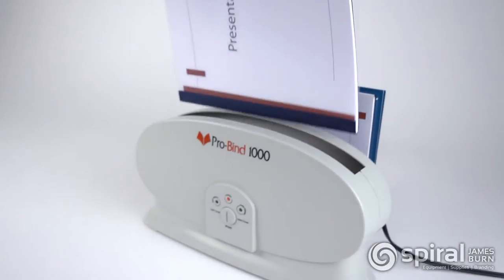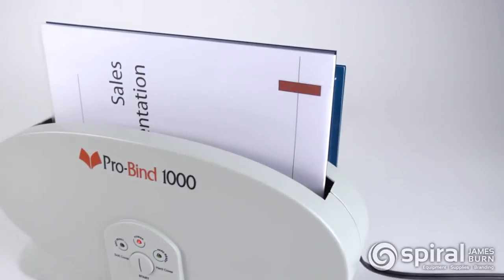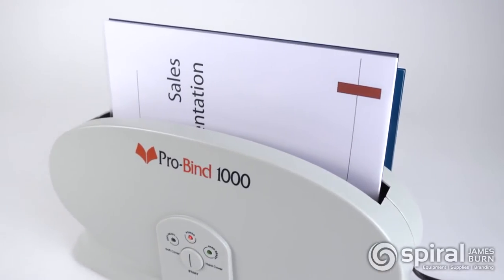With a binding capacity of up to three-fourths inch spine, the ProBind 1000 is able to thermal bind soft and hard covers with a simple touch of a button.